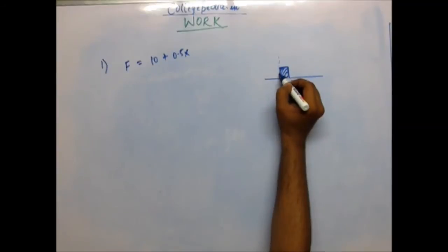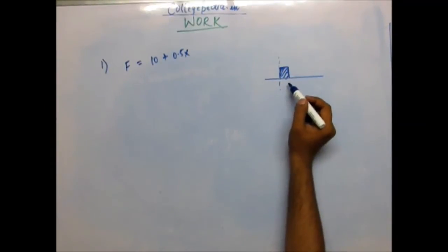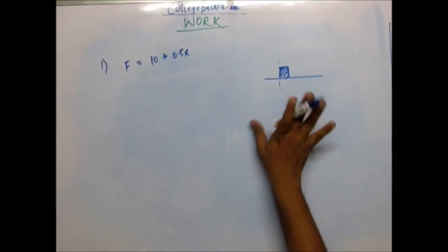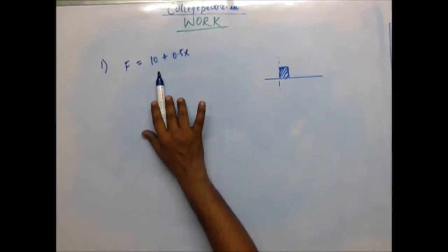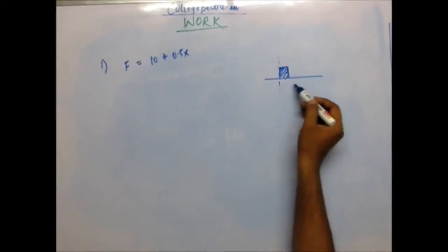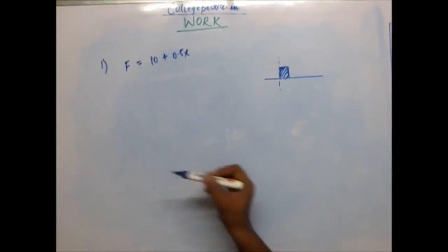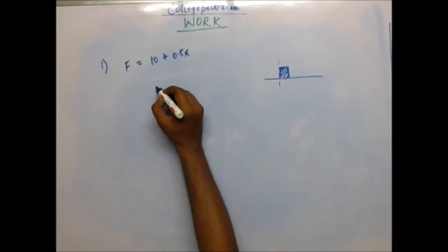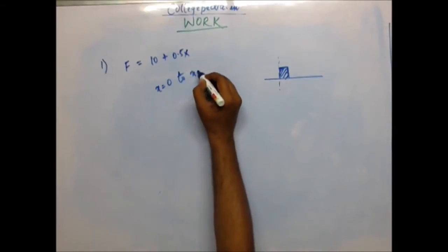The force is such that F = 10 + 0.5x, where x is actually the displacement that this block will have when it is moved. Presently when it is at the mean position, it has zero displacement, so the force applied on this block will be 10. When it has a displacement of 1, the force applied would be 10.5, and likewise. You have to calculate what will be the amount of work done when the displacement is from x = 0 to x = 2.